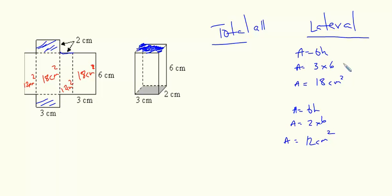So for my lateral surface area, I'm just going to add 18 plus 18 plus 12 plus 12. So 16, 18, 20, 2 plus 1 is 3, 4, 5, 6. So lateral surface area is 60 centimeters squared.